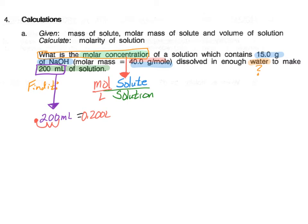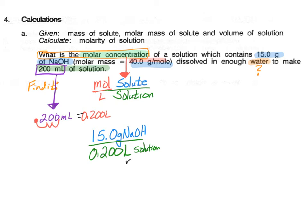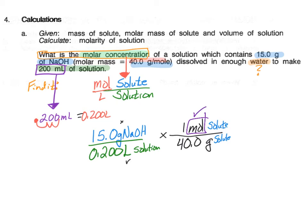Now we set up the calculation. We take the 15 grams of NaOH and place it over 0.2 liters of solution. Right now we have grams of solute over liters of solution — we've got liters where we want it, but we need moles, not grams, on top. Since we have grams on top, in the molar mass ratio grams goes on the bottom and moles on top. So we put 40 grams on the bottom and 1 mole on top. We now have moles per liter — exactly the units we need.